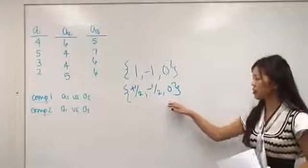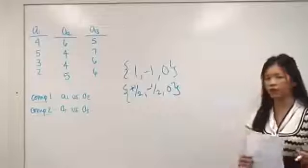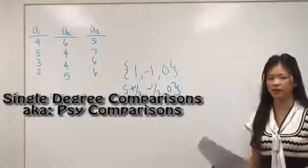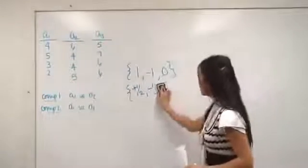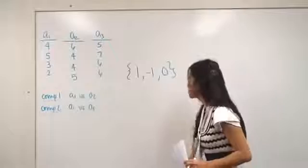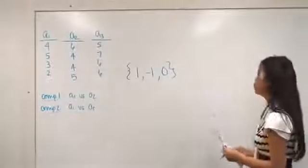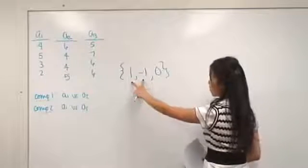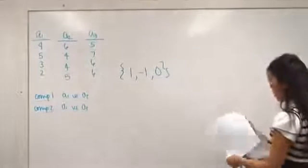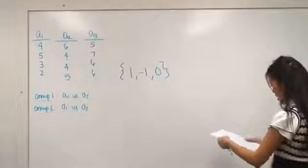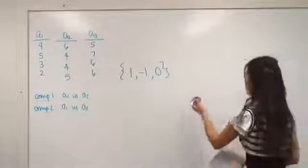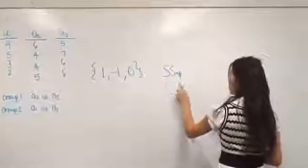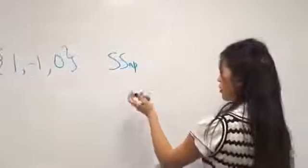I'm going to put these coefficients into my equations to figure out the sum of squares for these single degree-of-freedom comparisons, also called psi comparisons. I'm going to use whole numbers because that's easier. If you're looking at A1, A2, and A3, that just tells me I'm comparing A1 to A2. The book gives specific equations — the first one you need to know is sum squared psi, the notation we use for single degree-of-freedom comparisons.